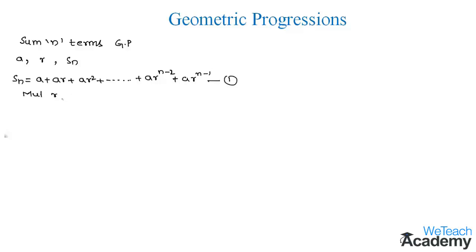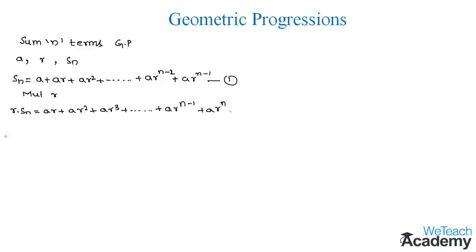So we get r into Sn equal to ar plus ar squared plus ar cubed plus so on. Coming over to the nth term, if we multiply by r the power reduces by 1, and we get ar to the power n minus 1. Likewise we get the next term as ar to the power n. Let us consider this as equation 2.